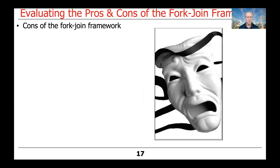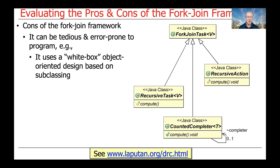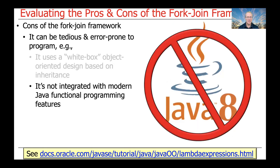Not everything is perfect, so there are some cons to using this framework. In particular, it can be somewhat tedious and error-prone to program relative to alternatives. For example, it uses a white-box object-oriented design based on subclassing from a common superclass known as the fork-join task. You have to use inheritance and method overriding, which is a bit cumbersome. Additionally, because the fork-join framework predates the introduction of modern functional programming features in Java — which came in Java 8 and beyond — it doesn't have good support for lambda expressions or method references.